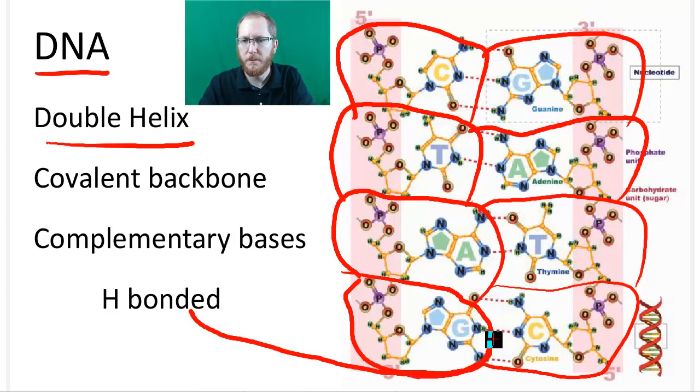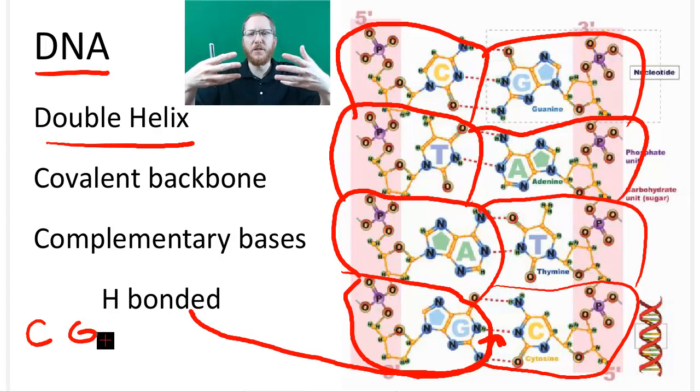The key thing about those is that the bases have a partner. We call it the complement - complementary bases. What this means is that if you have a C, a cytosine, it wants to partner up with a guanine. By want, what I mean is it's most stable for it to line up because they'll stick together. Like magnets that want to stick together if you line them up properly, C and G will line up and form these hydrogen bonds.